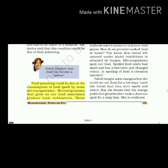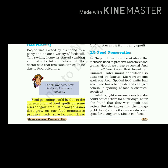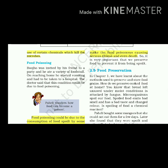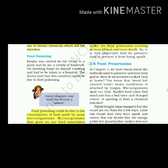Boozoo was invited by his friend to a party and ate a variety of food. On reaching home, he started vomiting and had to be taken to hospital. The doctor said his condition could be due to food poisoning. Food poisoning could be due to the consumption of food spoiled by some microorganisms. Microorganisms that grow on our food sometimes produce toxic substances, making the food poisonous and causing serious illness and even death. So it is very important that we preserve food to prevent it from being spoiled.